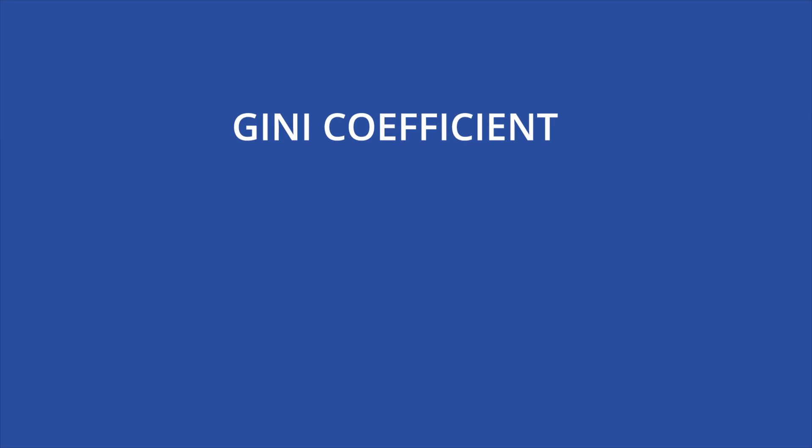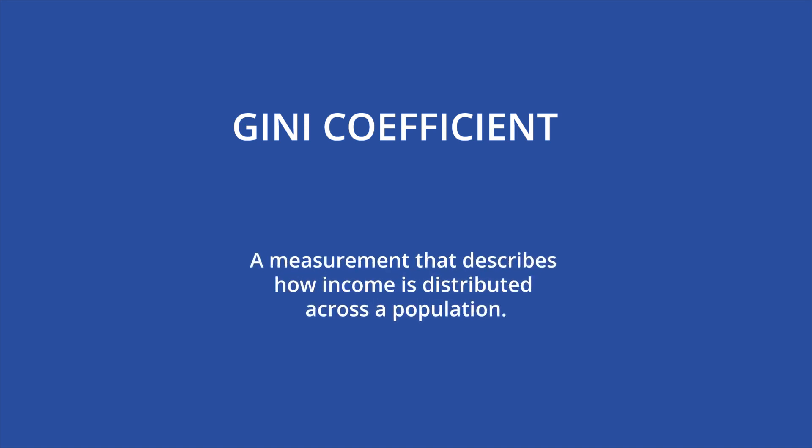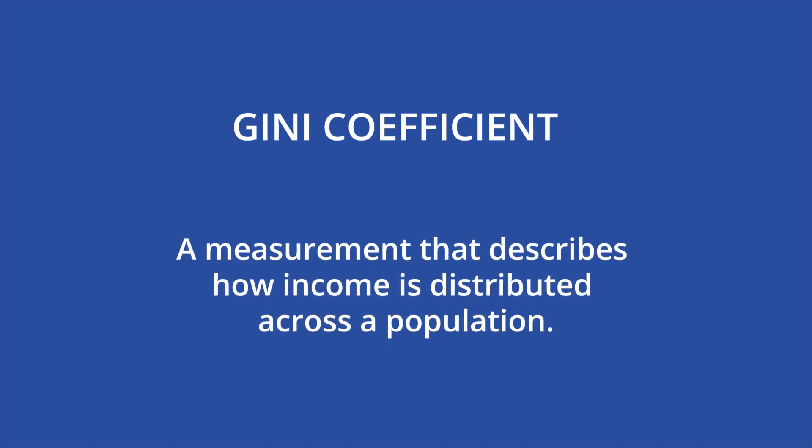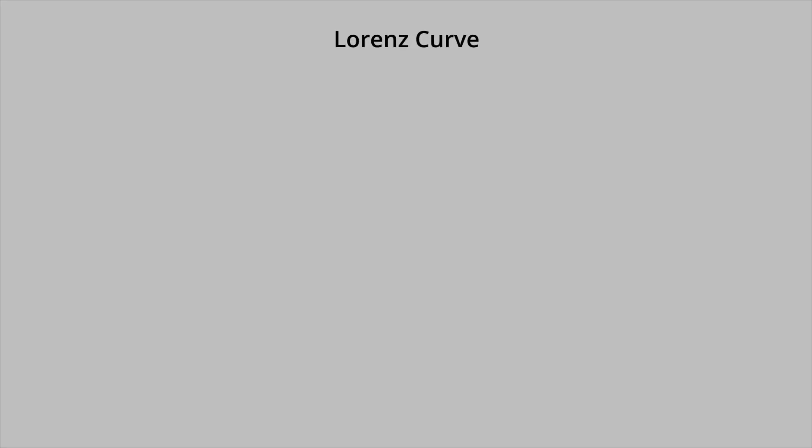The Gini Coefficient, also known as the Gini Index or Gini Ratio, named after Italian statistician Corrado Gini, is a measurement that describes how income is distributed across the population. It is also less commonly used to observe wealth distribution.